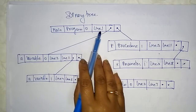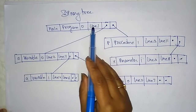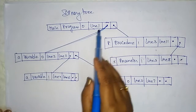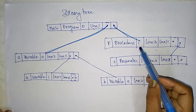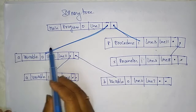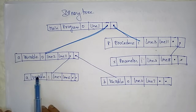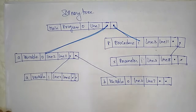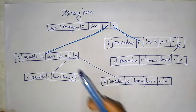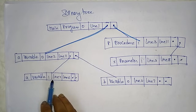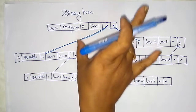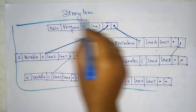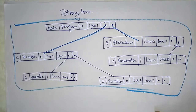In the binary tree, if you take the main program, the variables declared there are present at line one. The main program has different procedures — one procedure from line 3 to line 11, and another module in the main program. Variables are declared at line 2 and line 4, with accessibility from line 2 to line 4 and line 4 to line 6. In this way, the symbol table for a particular program is arranged and stored in the form of a binary tree.